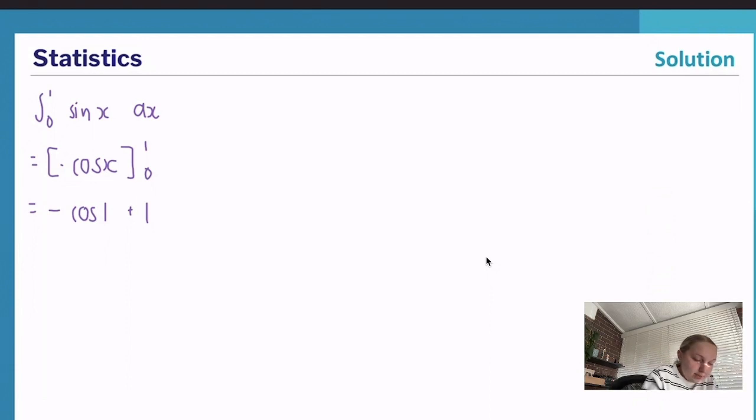If we put that in our calculator, everyone want to give it a go putting that in their calculator, then we're going to get it's just about equal to 0.4597 to four decimal places.